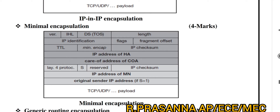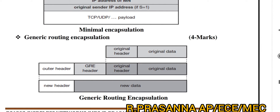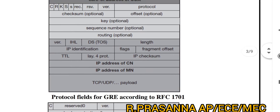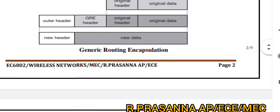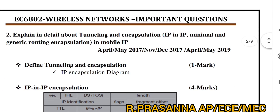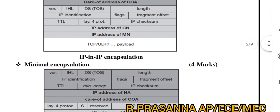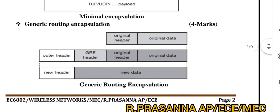The first diagram is for Generic Routing Encapsulation. This is a specific format — if you use this format you can explain the concept clearly. Looking at the Mark Split-Up: IP-in-IP is 4 marks, Minimum Encapsulation is 4 marks, Generic Routing Encapsulation is 4 marks.